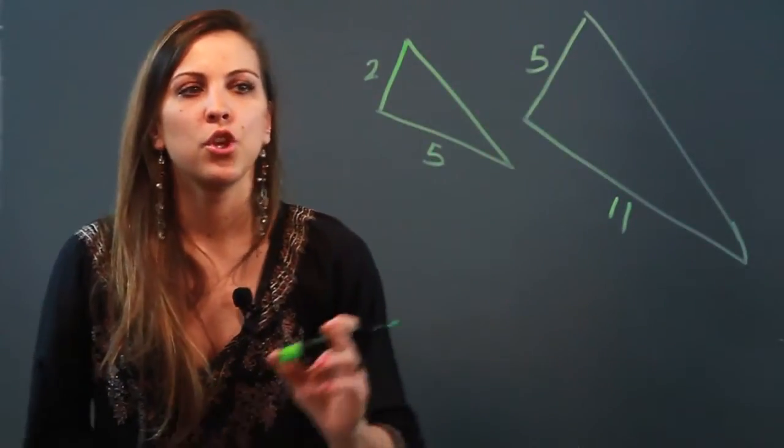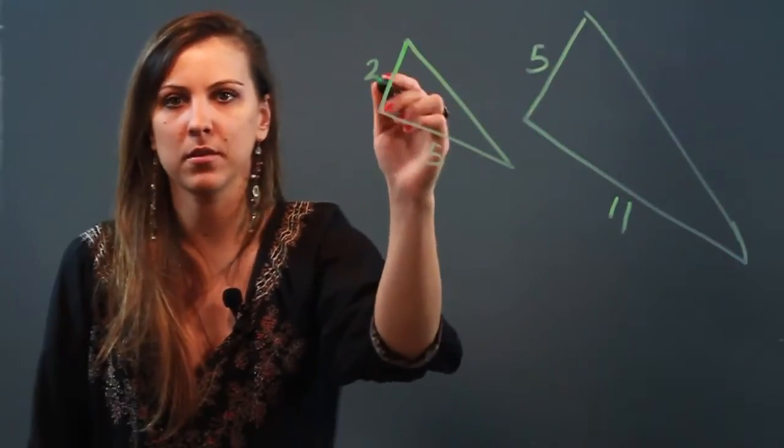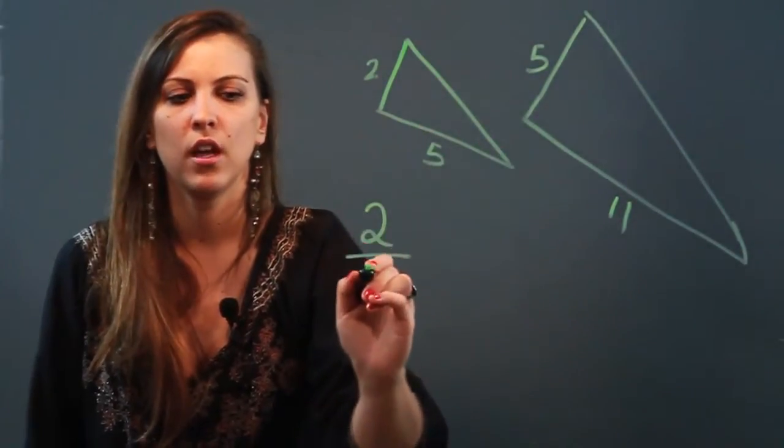Here's what you do. You take any ratio that you want from your first triangle. So I only have two numbers in the first triangle so I'm going to go ahead and pick those two and write a ratio 2 over 5.